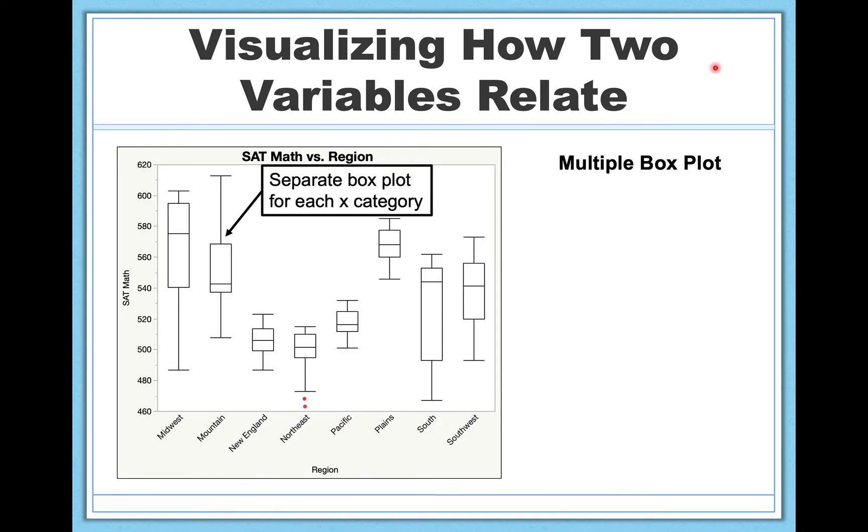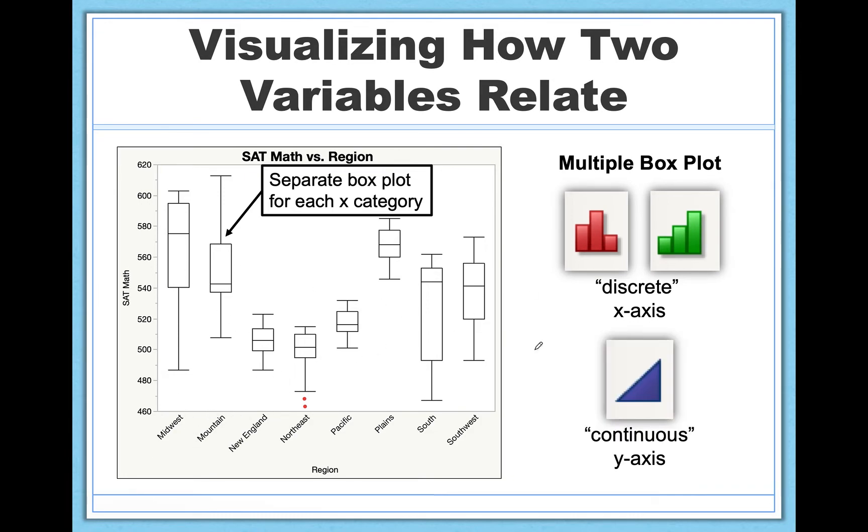First, we're going to take this idea of the box plot that we just saw and we're going to basically introduce a second variable. So here's SAT math scores on the y-axis. That's what you're seeing for each box plot and region on the x-axis. So we can look at how people tend to score on SAT math on the basis of what region they're from. So here we're looking at a discrete x-axis, meaning nominal or ordinal. This is separate categories of things here. And then we're looking at a continuous y-axis, an interval ratio y-axis. So if you have these types of data, this graph is very appropriate.